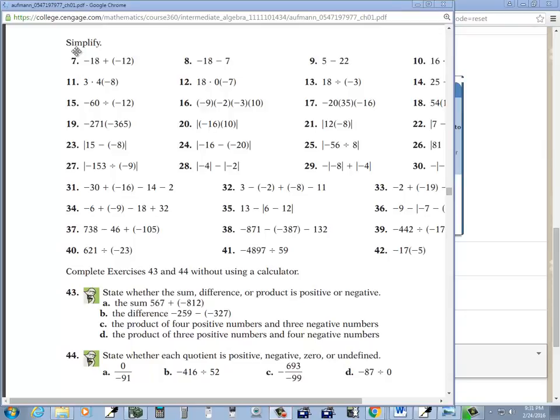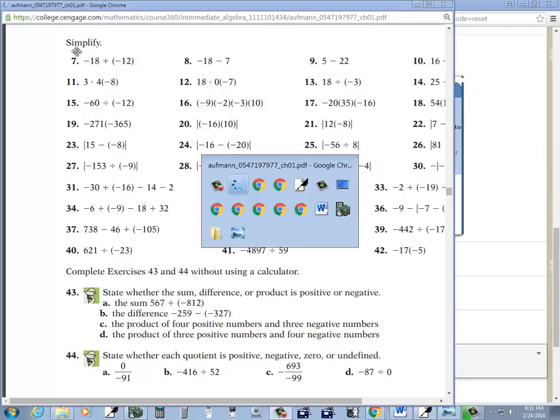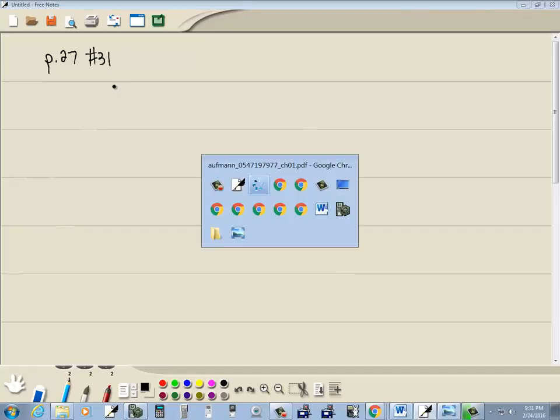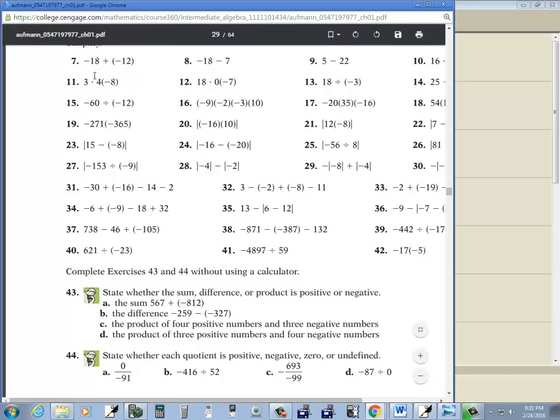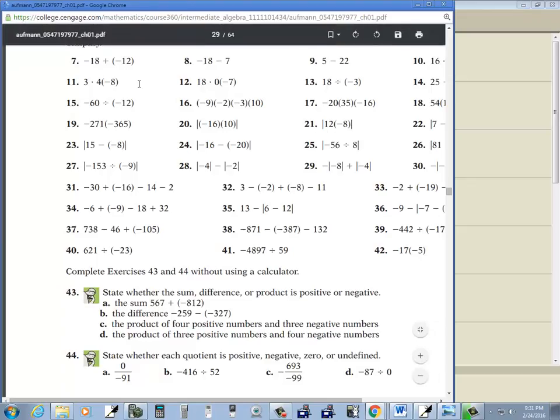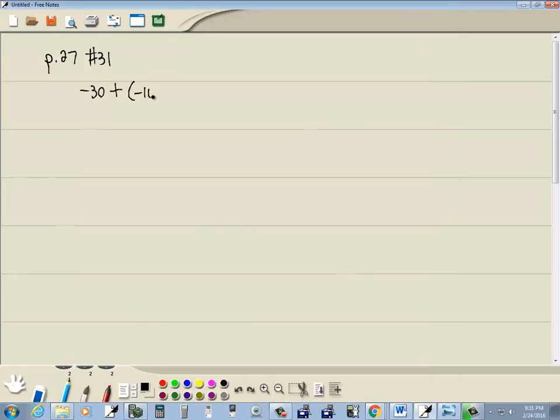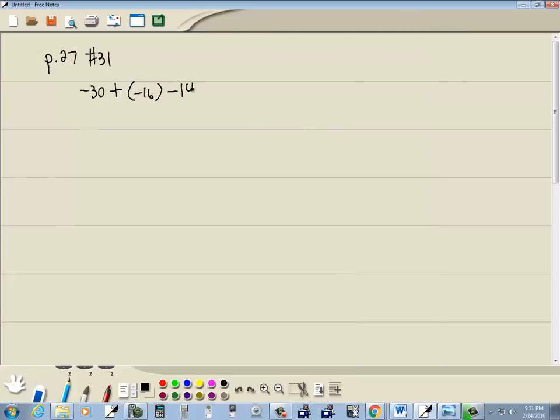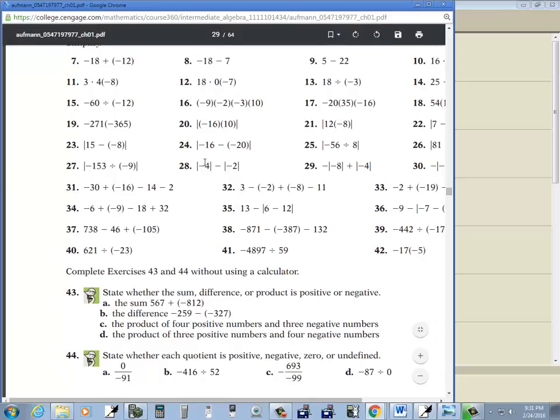Let's take a look at page 27, number 31. We've got negative 30 plus negative 16 minus 14 minus 2.